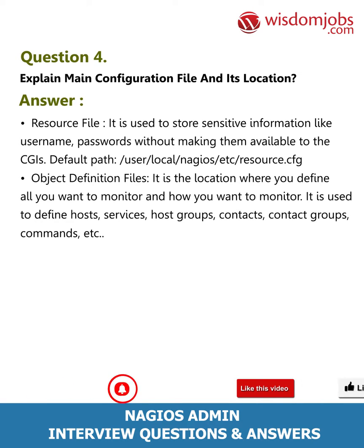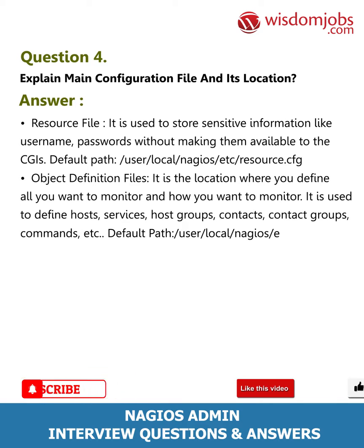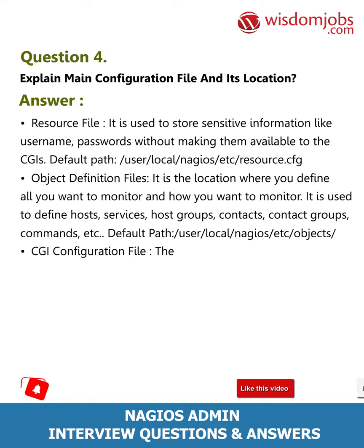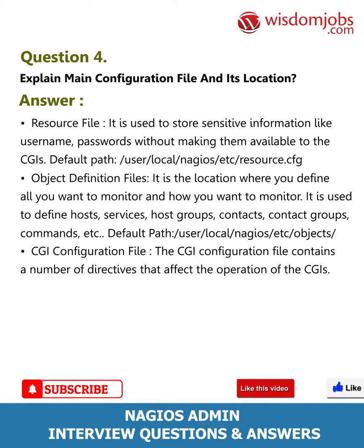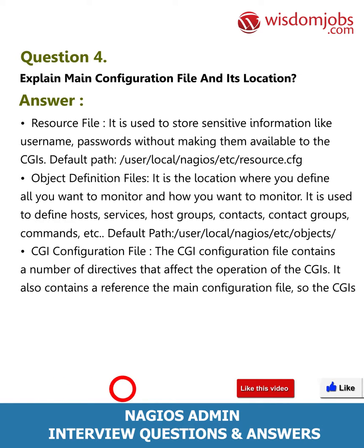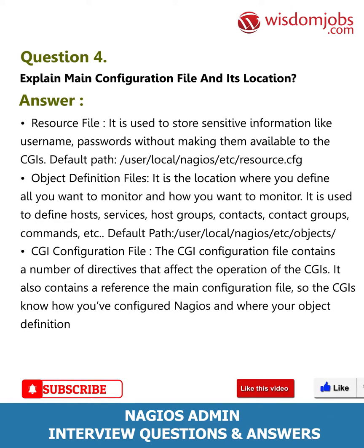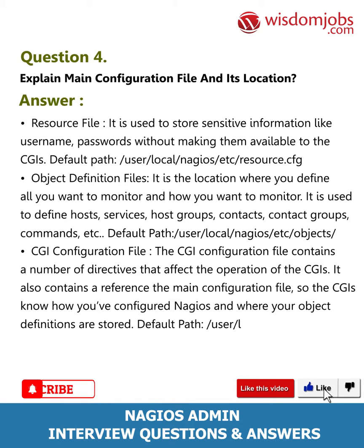Default path for object definition files: /usr/local/nagios/etc/objects/. CGI configuration file — the CGI configuration file contains a number of directives that affect the operation of the CGIs. It also contains a reference to the main configuration file, so the CGIs know how you've configured Nagios and where your object definitions are stored. Default path: /usr/local/nagios/sbin/.